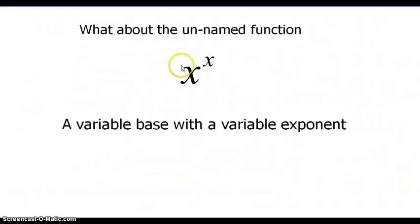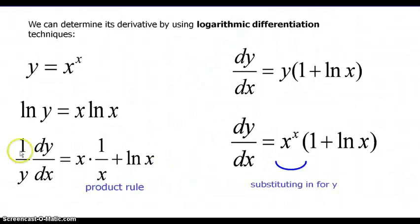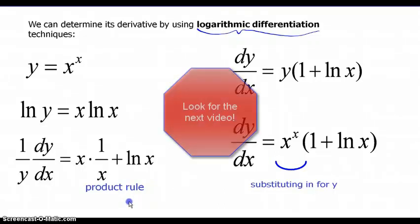What about a function that has a variable in both the base and the exponent? Is it an exponential function or a power function? It's actually neither — it's an unnamed function that doesn't follow either rule. We'll find its derivative using logarithmic differentiation, which we'll walk through step by step in another video.